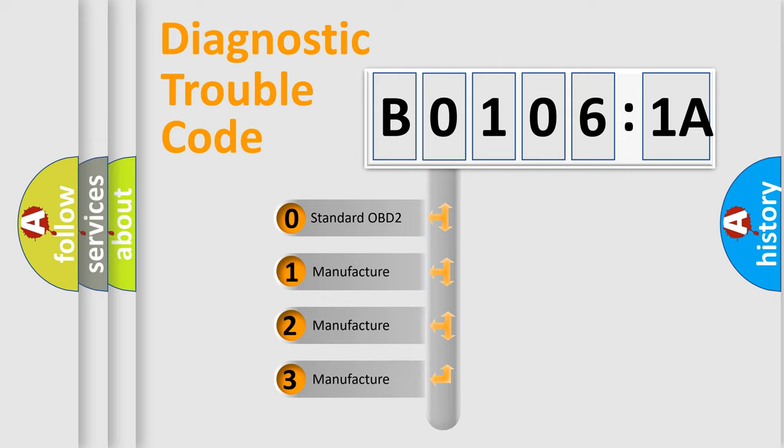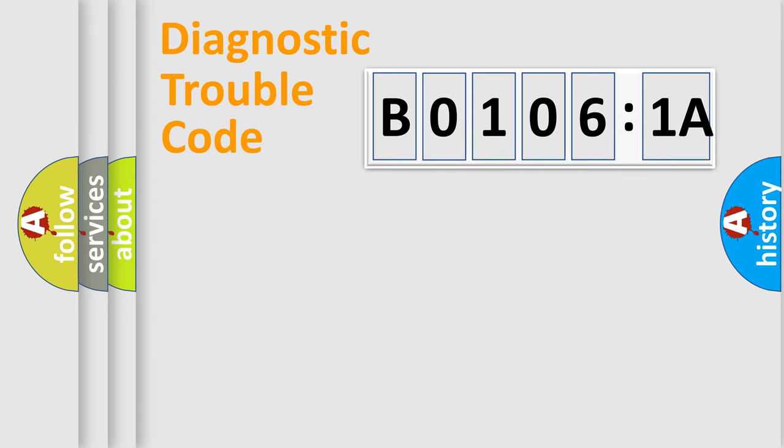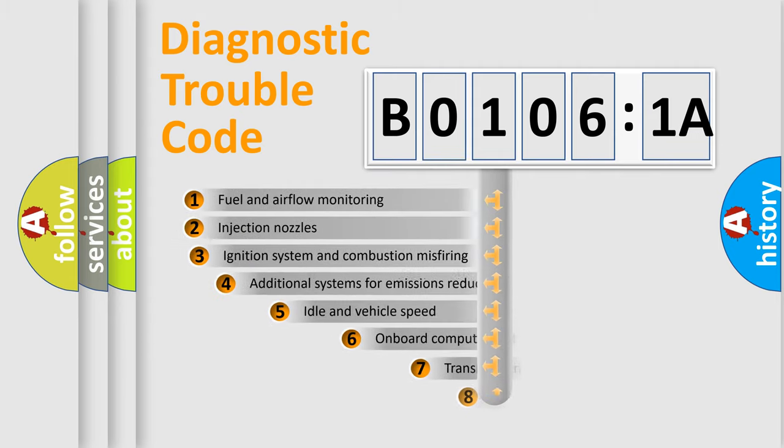If the second character is expressed as zero, it is a standardized error. In the case of numbers 1, 2, or 3, it is a more precise expression of the car-specific error.